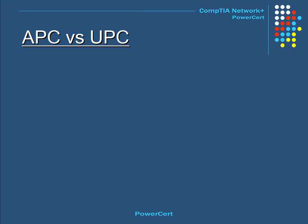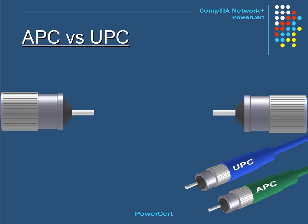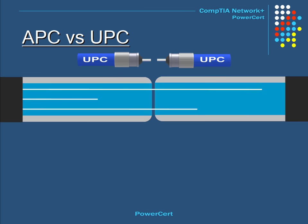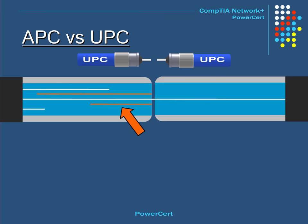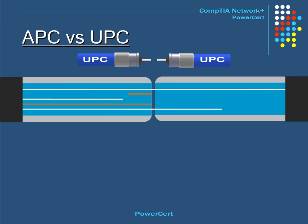Now we're going to talk about the difference between UPC and APC connectors, using a group of ST fiber connectors equipped with each. When fiber optic connectors make a connection to each other, the point of connection is not perfect because of small surface imperfections. Light is transmitted from one connector to the other, but at that point, light will also reflect back in the opposite direction towards the light source, causing signal loss. This is what happens in a UPC connector — light is reflected directly back.